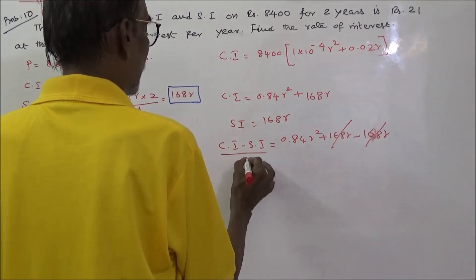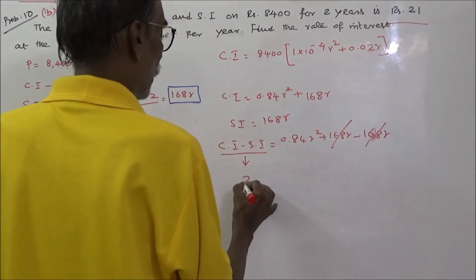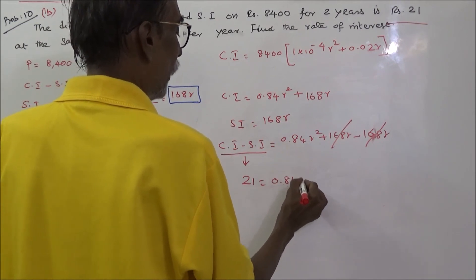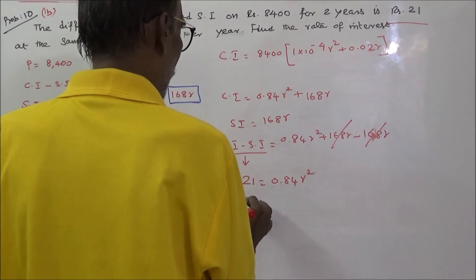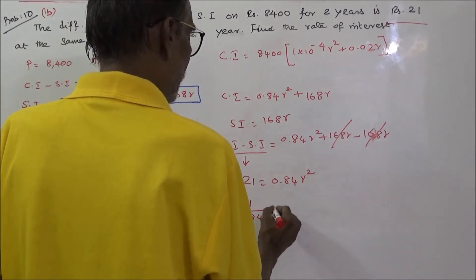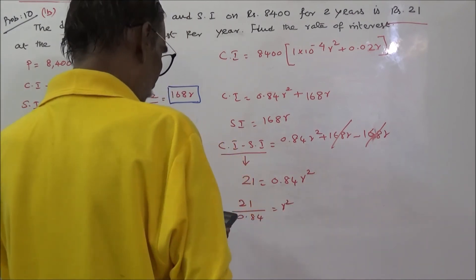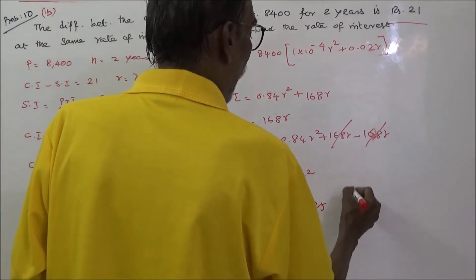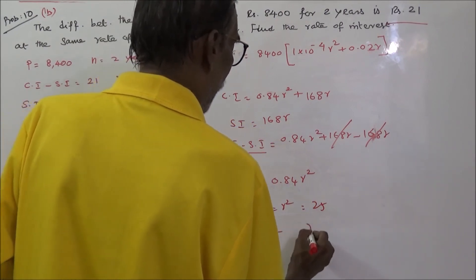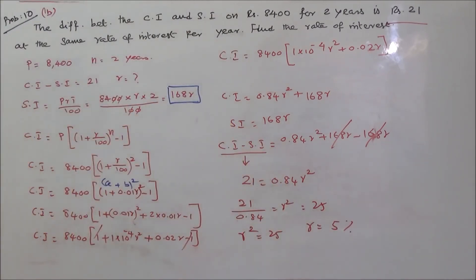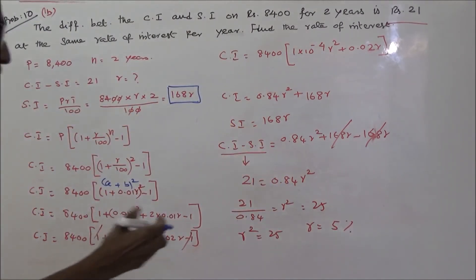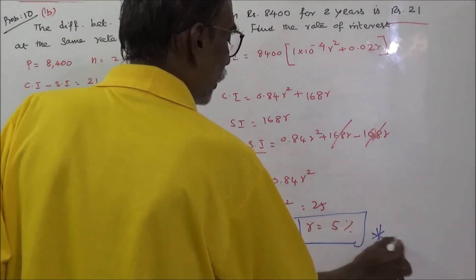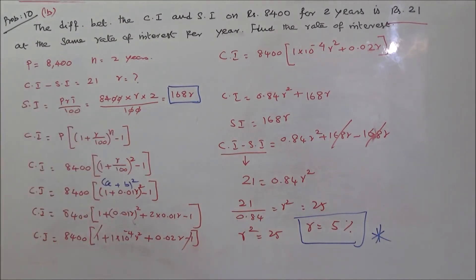The remaining value equals Rs. 21. So 21 equals 0.84R squared. Therefore R squared equals 21 divided by 0.84, which equals 25. So R equals 5%. The rate of interest is 5%. This way you work out this problem: if P equals 8,400 and n equals 2 years, the difference between compound interest and simple interest is Rs. 21 when the rate is 5%.